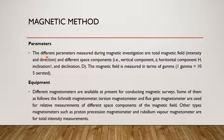Next one is the parameters. What are the parameters we measure during the magnetic field investigation? The first one is total magnetic field, that is its intensity and direction, and different space components, that is vertical component, horizontal component, inclination and declination. The magnetic field is measured in terms of gamma.